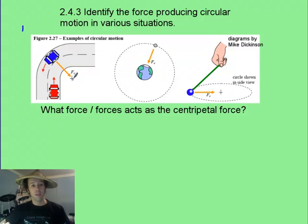In the first one, it's simply the friction of the tires on the road that keeps it towards the center of the turn.